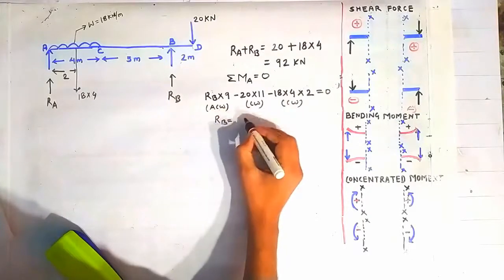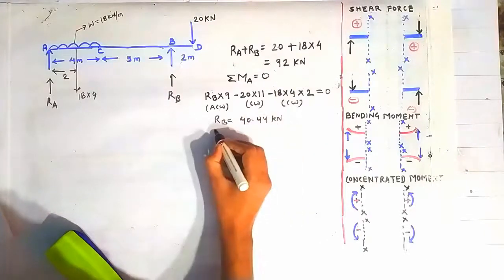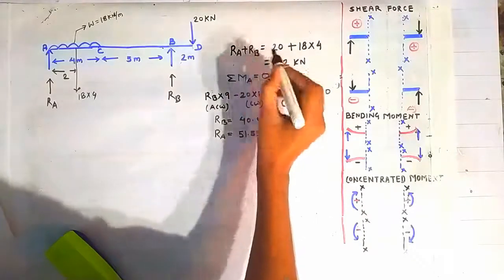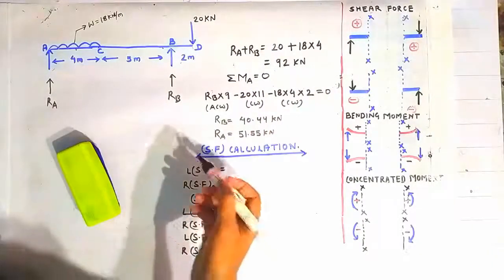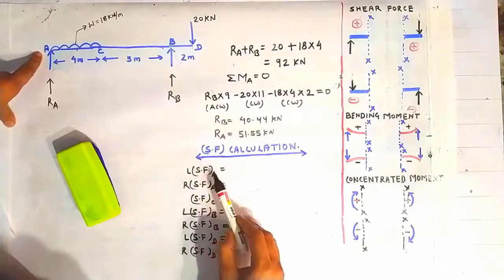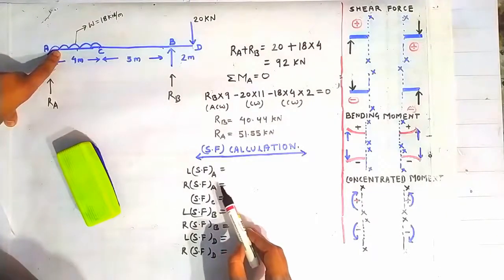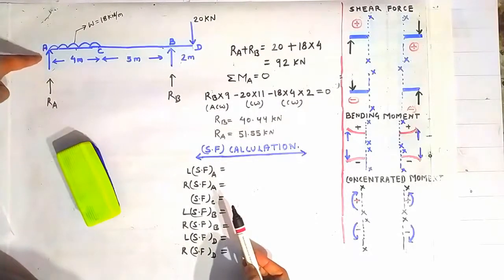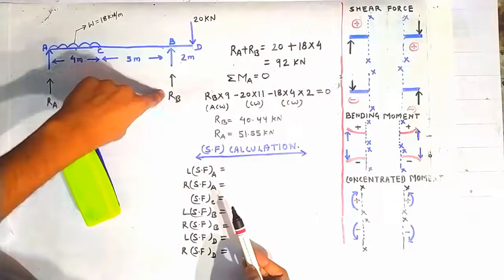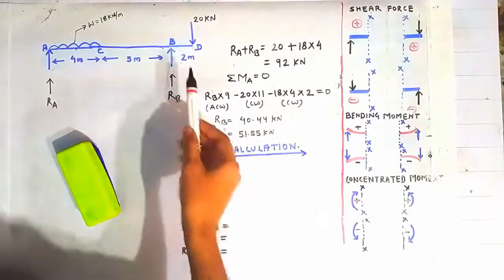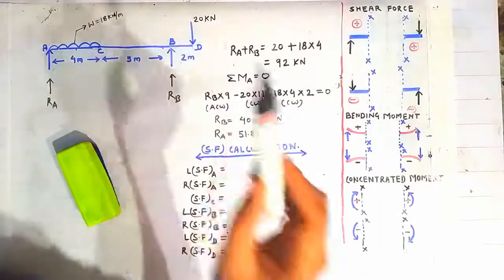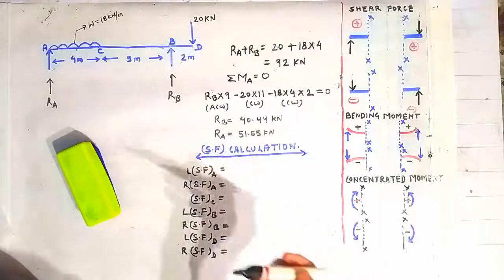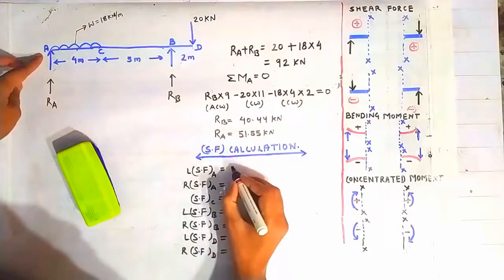Solving, we get Rb as 40.44 kN and Ra as 51.55 kN using the first equation. Now we will calculate the shear force at various points A, C, B, and D — on both the left and right sides of each point — because there are point loads (reactions) at A and B, and a point load at D. At point C there is no point load, so we calculate shear force directly. On the left side of point A the beam terminates, so shear force on the left side of A is zero.